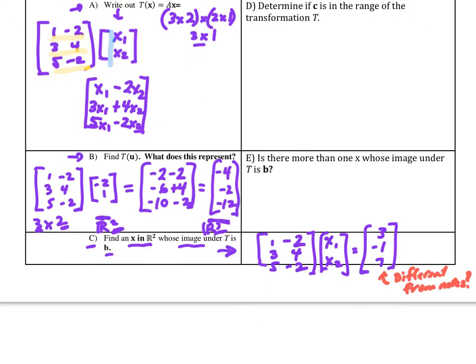Part C then says find an x in R2 whose image under T is b. So now I have my A, my x is equal to b and I want to solve that. How do we do that? Well obviously we go to an augmented matrix. Note that b is maybe different from the original notes I made because it didn't work out.